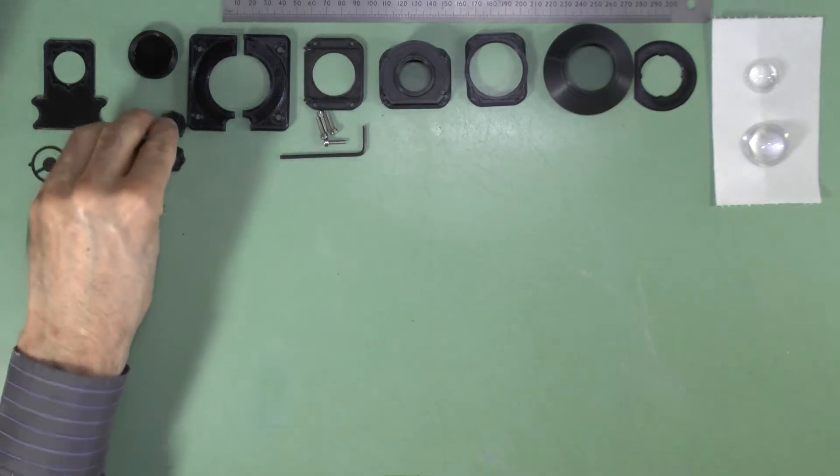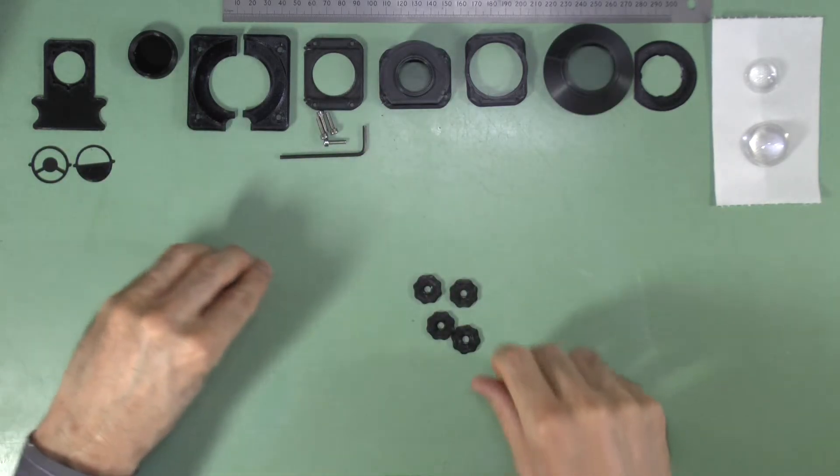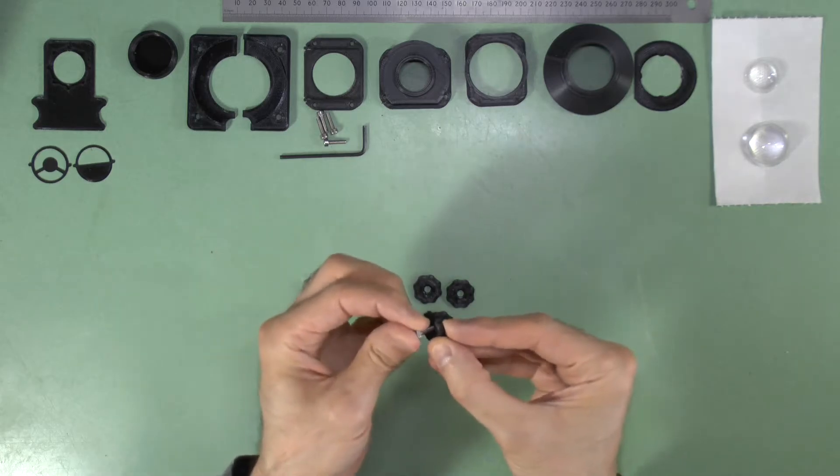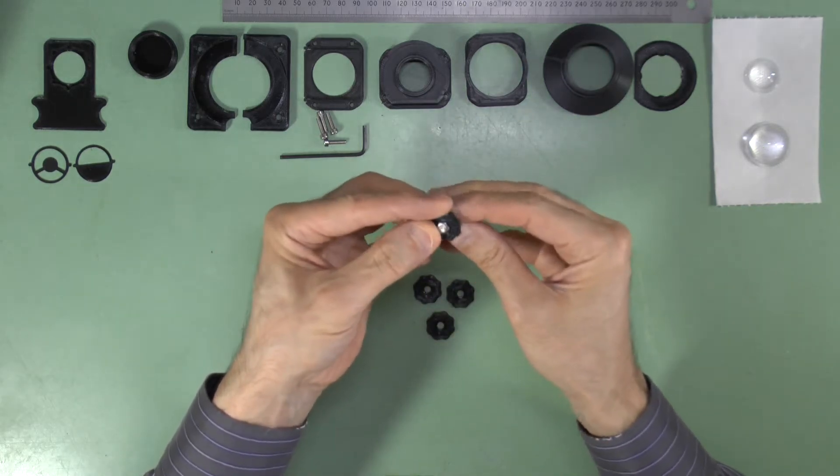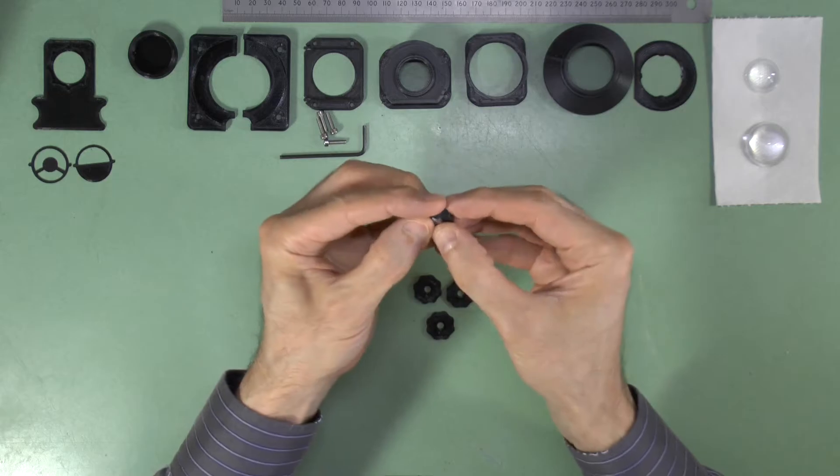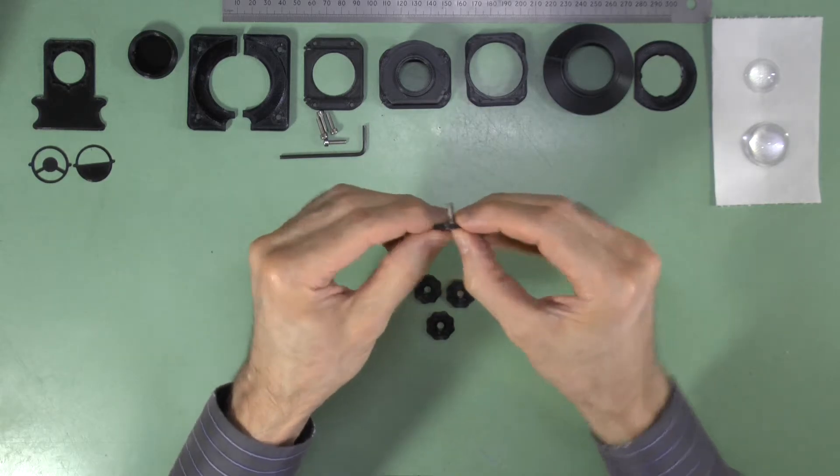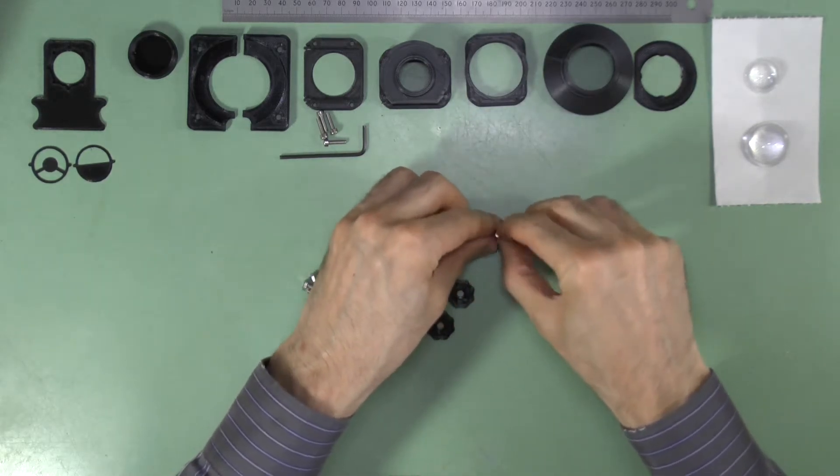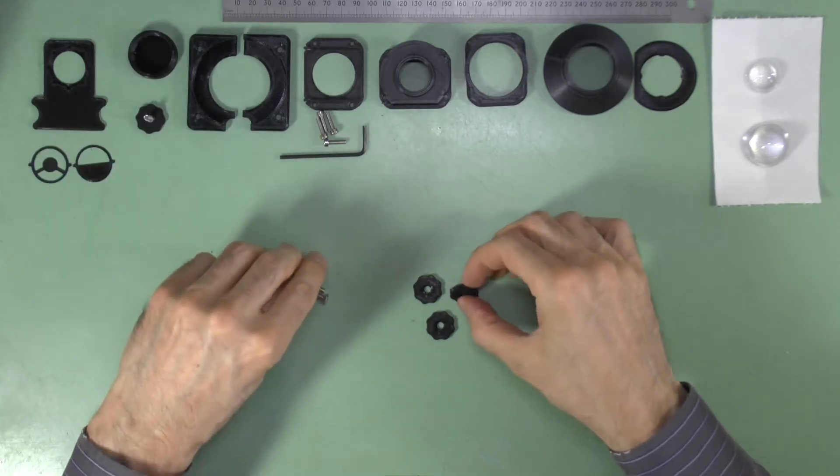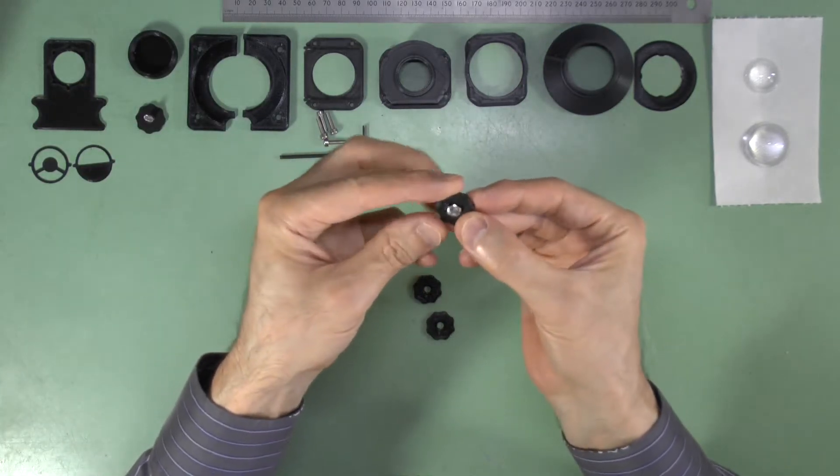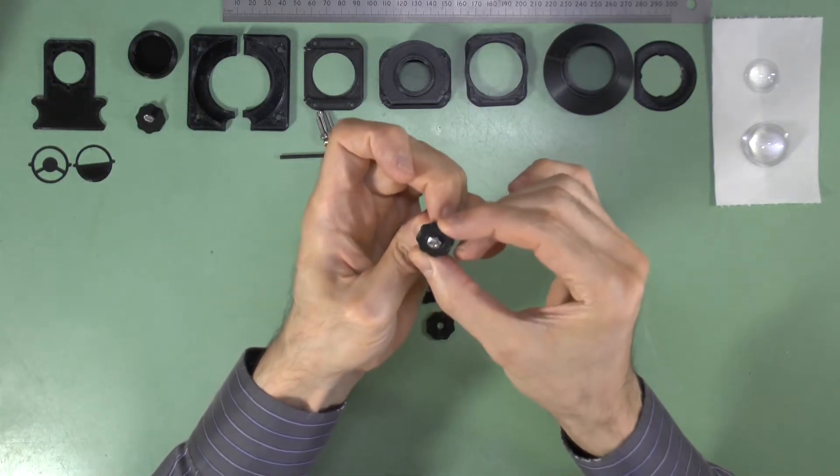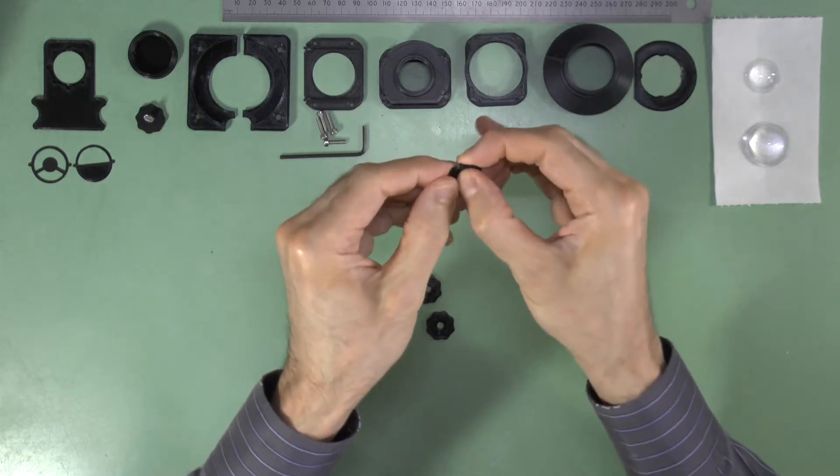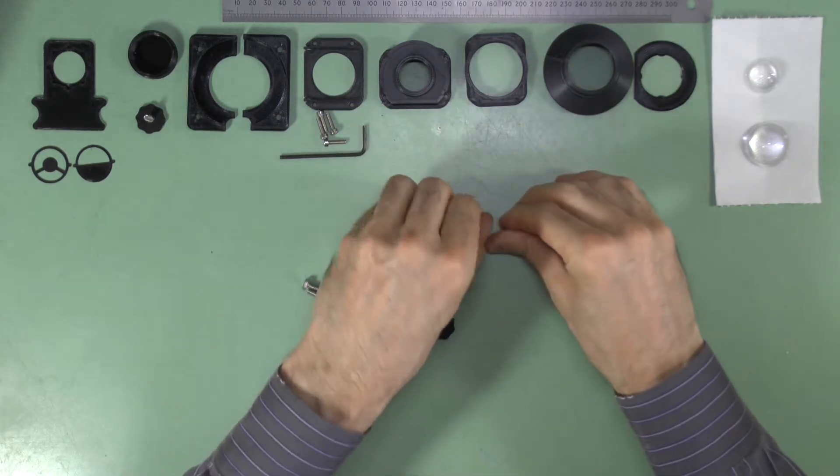Now prepare the M4 thumb screws by simply pressing a 12mm long M4 hex bolt into the 3D printed thumb screw head. You will need a total of four M4 thumb screws to fix the condenser to the stage, but if you are upgrading a foundation scope, you can use the two pre-existing M4 thumb screws and just add two more.